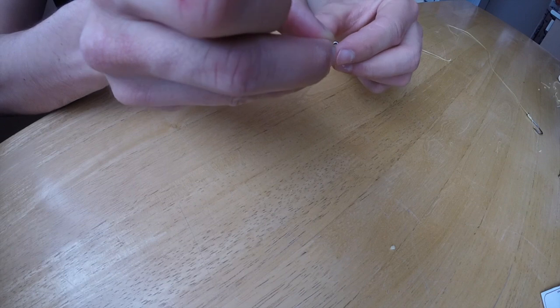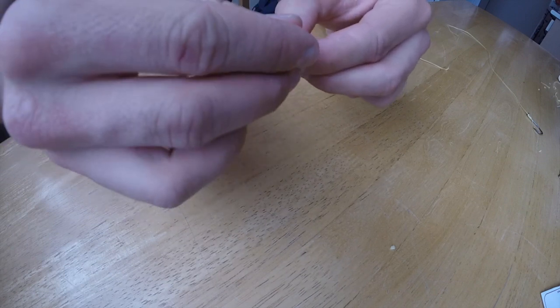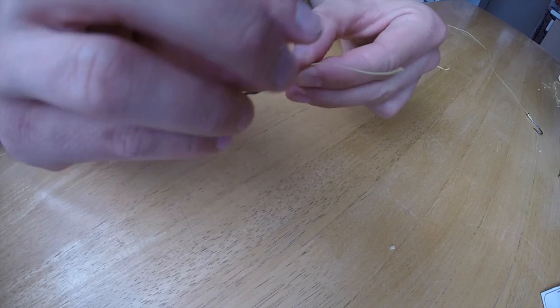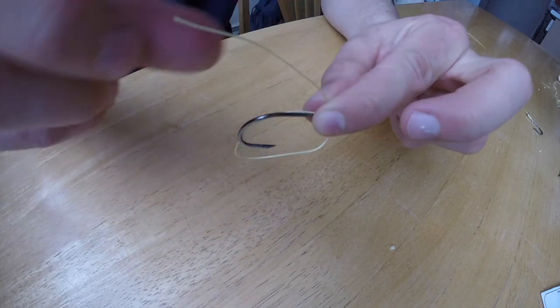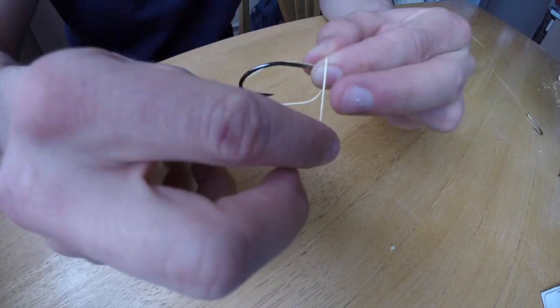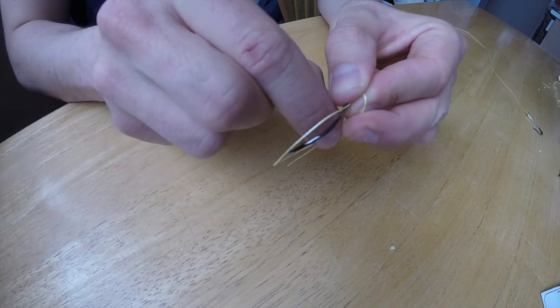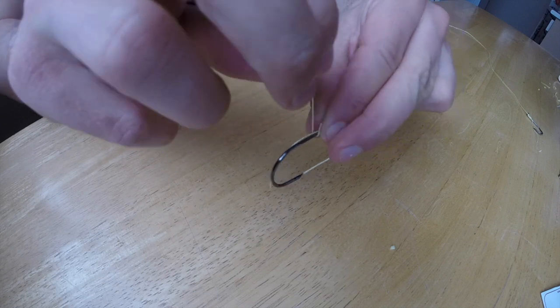Then you make a loop. I like going the front of the hook, so your loop's in the front of the hook. And then you wrap the end of your leader around that loop.